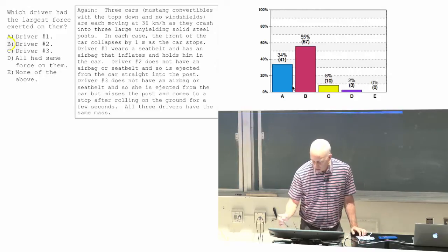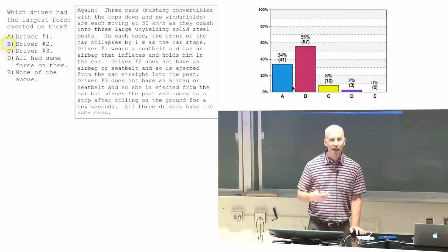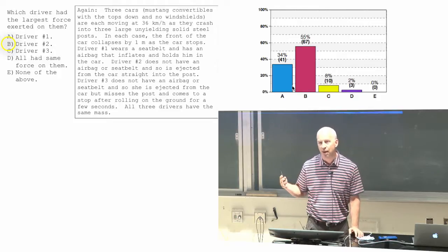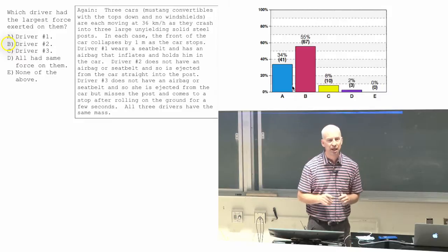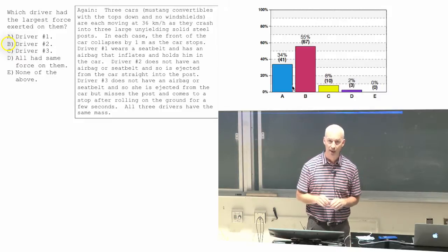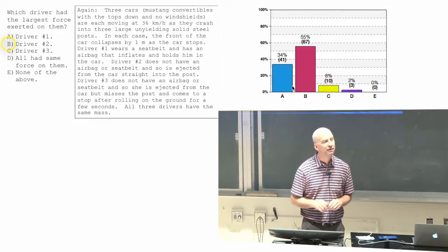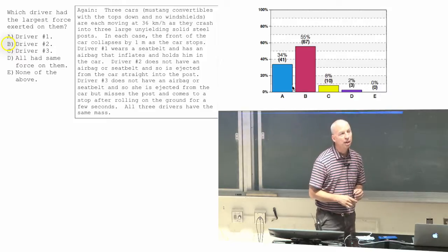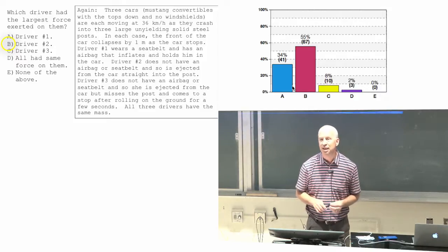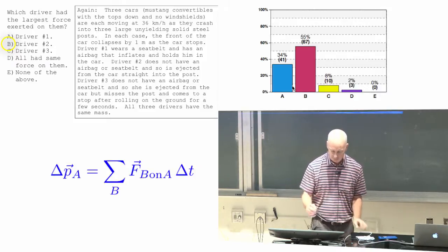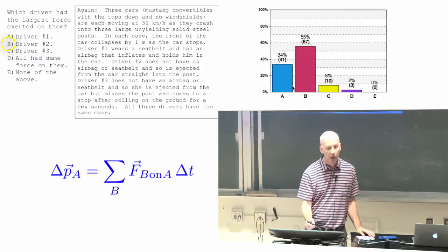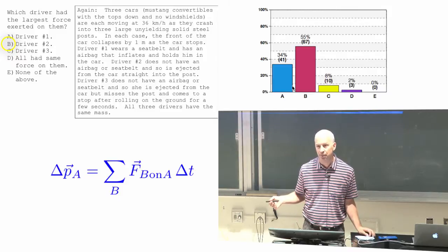Why does hitting a post, why is that the big giant problem? It's because you come to a halt in almost no time. In very, very tiny time you come to a halt, and that means there has to be a gigantic force. If delta T is really small, the force on you that causes that momentum change has got to be really big.